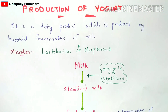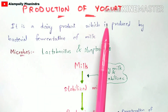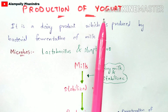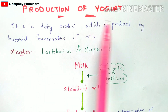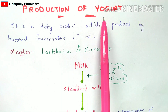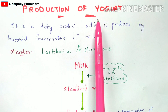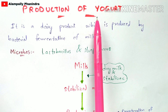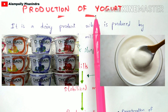In this video, let us discuss about the production of yogurt. What is yogurt? Yogurt is a dairy product which is produced by the bacterial fermentation of milk. This yogurt consists of nutrients which are mainly required for body growth. As you can see in the picture, this is yogurt which is available in every type of supermarket.